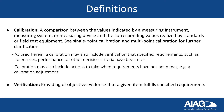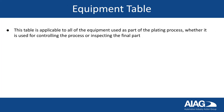Verification refers to the providing of objective evidence that a given item fulfills specified requirements. The equipment verification and calibration table is applicable to all of the equipment used as part of the plating process, whether it is used for controlling the process or inspecting the final part.